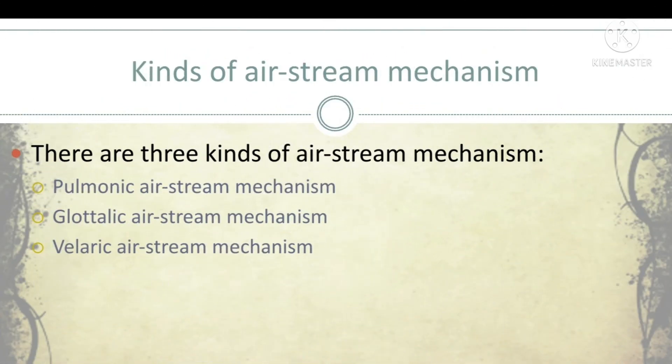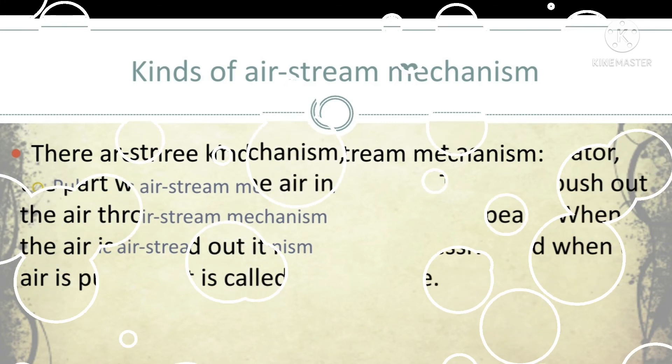There are three kinds of airstream mechanism in general. The first one is pulmonic airstream mechanism. The second one is glottalic airstream mechanism. And the third one is velaric airstream mechanism.